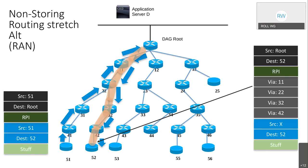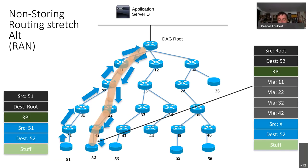There is an alternate possibility where the source, which is a RUN, instead of placing the RPI directly in the packet, uses encapsulation to the root. The root can then remove the outer header, removing the RPI. So at the root we get source 51 destination 52—the packet content—but the RPI is gone. The packet is bigger on the way up but smaller on the way down. Using this format is what the RUN can do if it wants to send a packet to the internet and ensure the RPI won't traverse it.